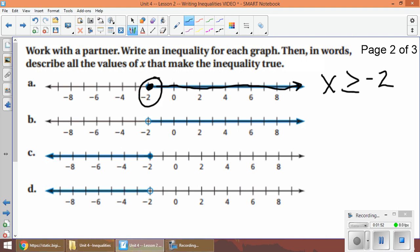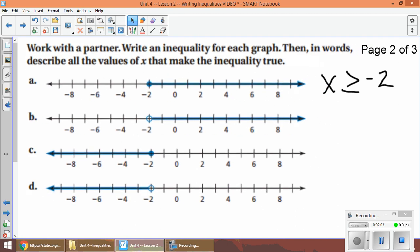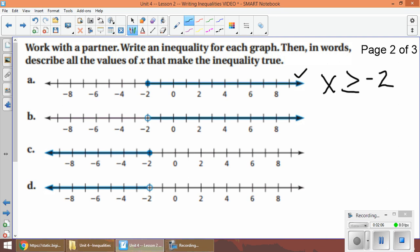So the way I read example a is my condition, I'm going to call x, you can call it whatever letter you want, has to be greater because the arrow is going to the right, and it's equal to because the circle is filled in, and negative two, that's the number my circle is over. So why don't you guys take maybe 20 seconds and try b, c, and d on your own. They're all going to start with x or whatever letter you choose, it doesn't have to be x, and try to fill in the rest of these. When you're ready I'll be going over the solutions right now.